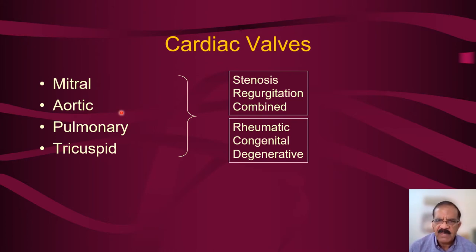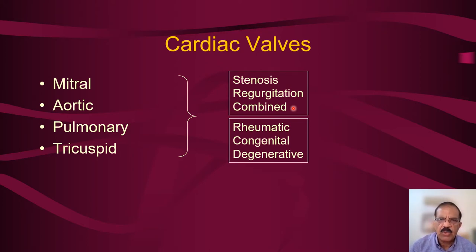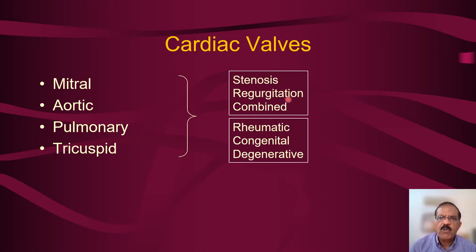A valve has only two functions: it opens and it closes. If a valve is damaged it might not open properly — that condition is called stenosis. It might not close properly — that is called regurgitation, where blood regurgitates back into the previous chamber. In many conditions you would actually have a combined lesion on clinical examination; one condition may be predominant, but there would usually be a combined lesion.